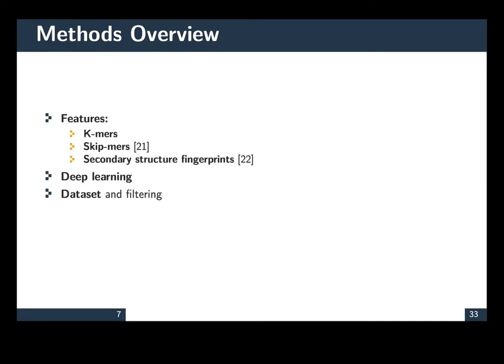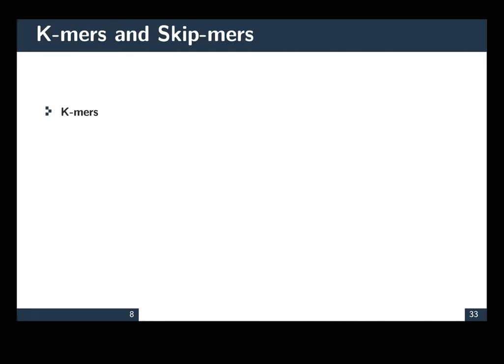The method looks like this. For the features, we use three types of features: K-mer, skip-mers, and secondary structure fingerprints. K-mers are well known in bioinformatics, and they're often used with machine learning techniques. We use K-mers of size 4, 5, and 6.